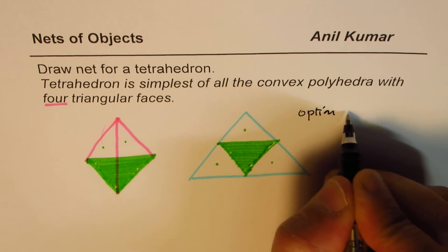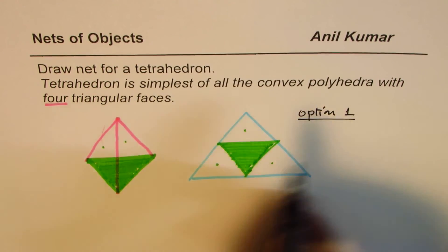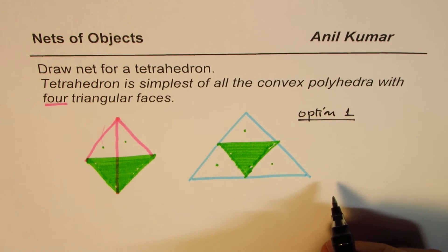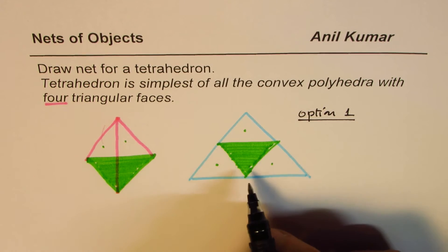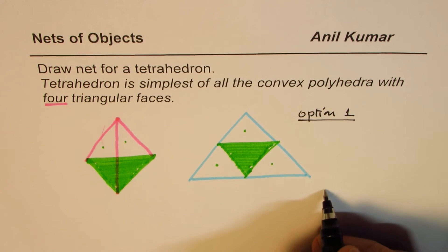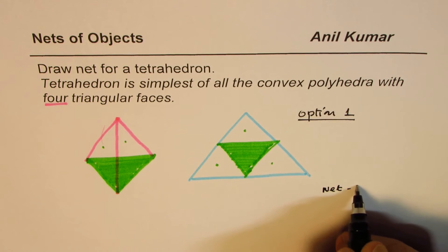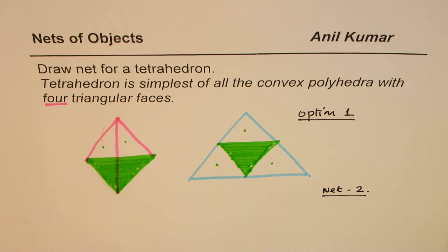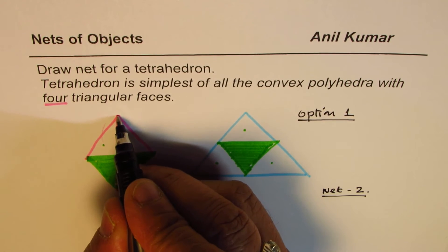Now whenever we are talking about nets, you could draw different ways in which you can draw a net. So what could be the other net? I'd like you to draw net two for the same figure. Well, this time let us consider that we cut it open from one of these sides.